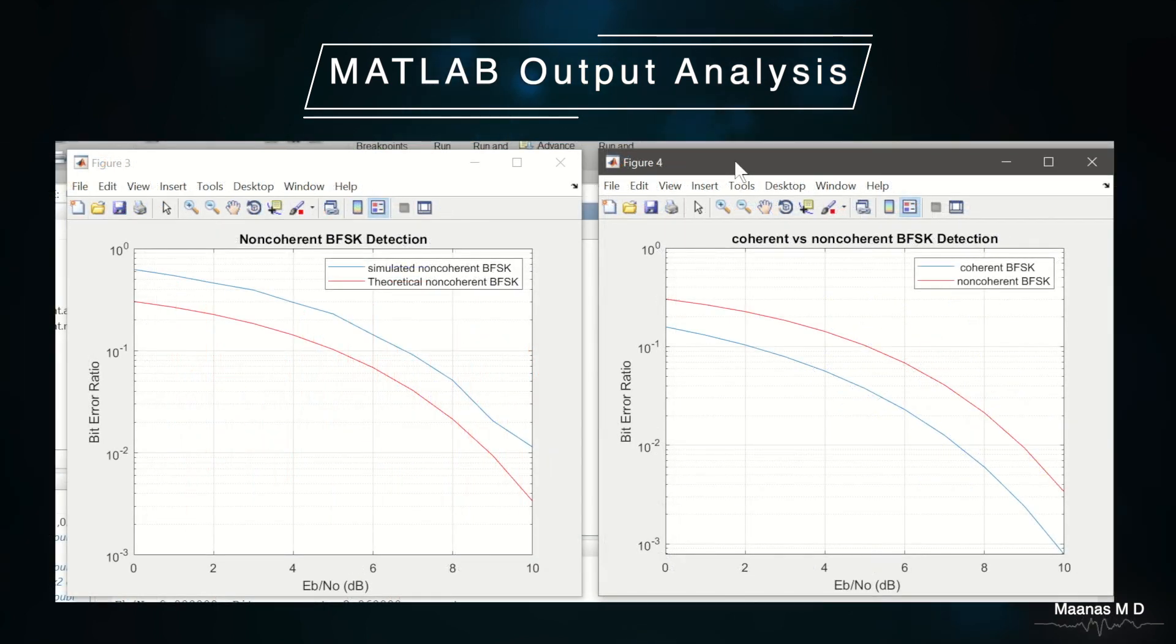Figure 3 is a plot between the simulated non-coherent BFSK error and the theoretical non-coherent BFSK error. The red line is the theoretical value and blue line is the simulated value. Here we can see that there is a clear difference between the two values. This is because of the presence of the attenuation factor and noise. As the noise increases then the probability of error also increases. Hence there is a deviation from the theoretical value.